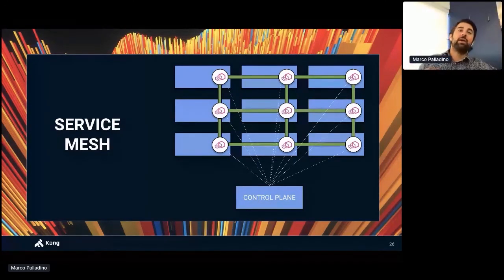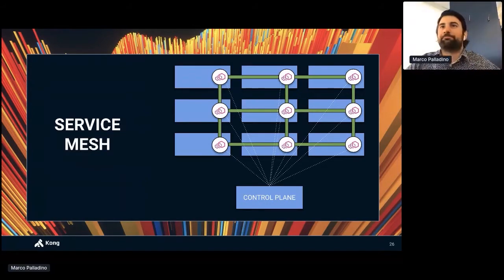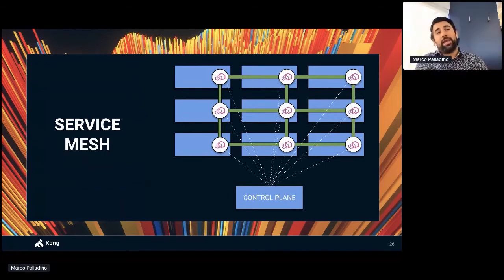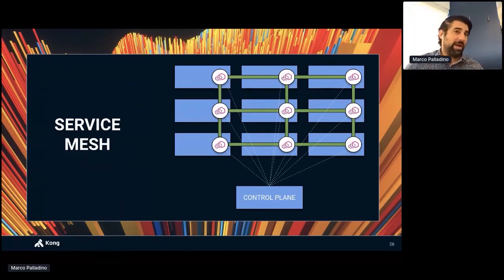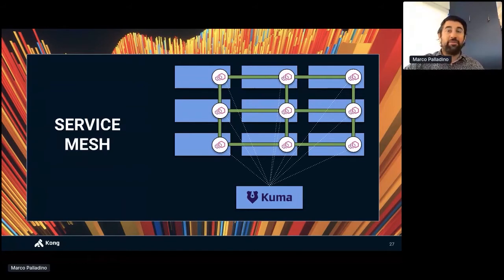The data plane proxy intercepts outbound requests to apply network policies, and receives inbound requests to enforce end-to-end encryption, tracing, and mutual TLS. When we have many proxies, we introduce a control plane as a scalable way to configure them. Service mesh is the combination of these data planes and a control plane. At Kong, we released a project called Kuma — a control plane built on top of Envoy that supports Envoy as a data plane proxy. It's simple, portable, and easy to use.